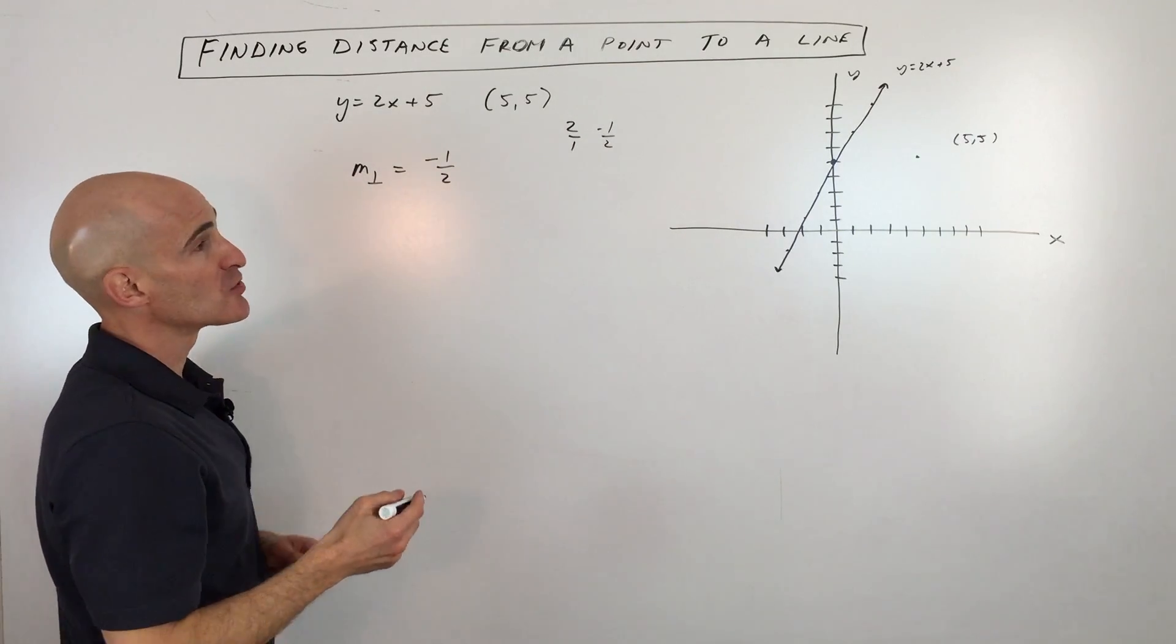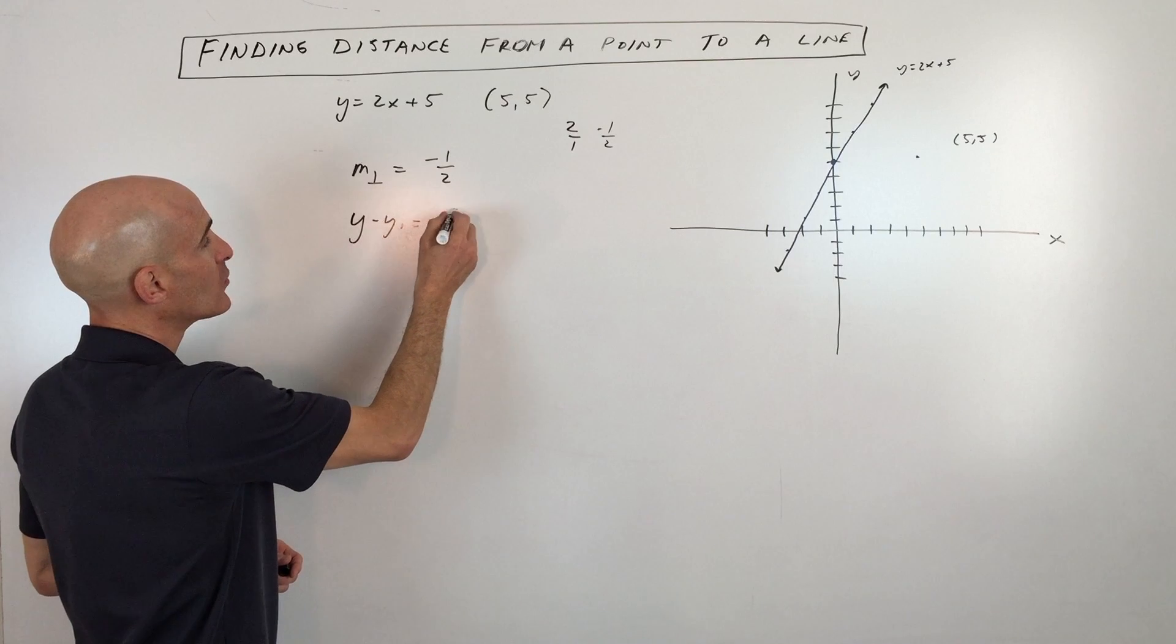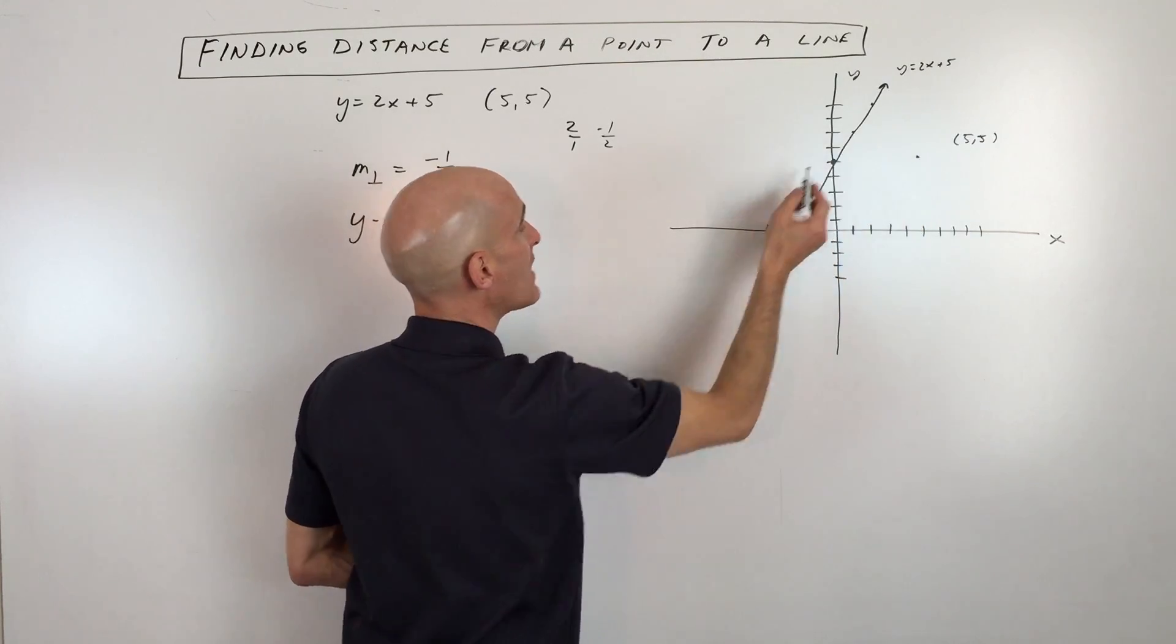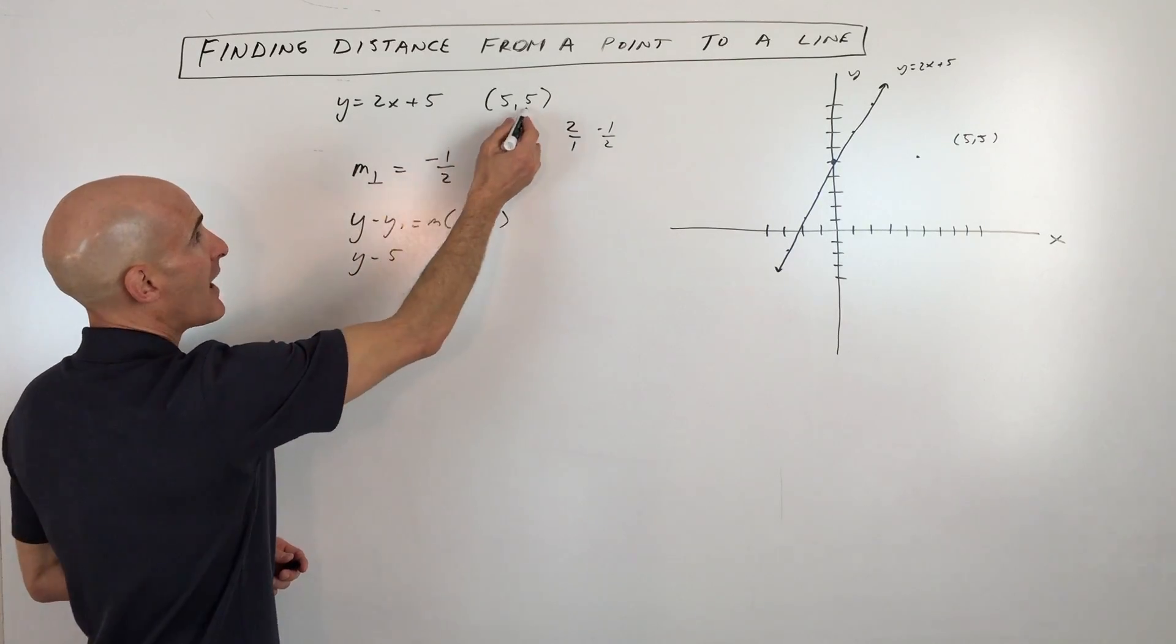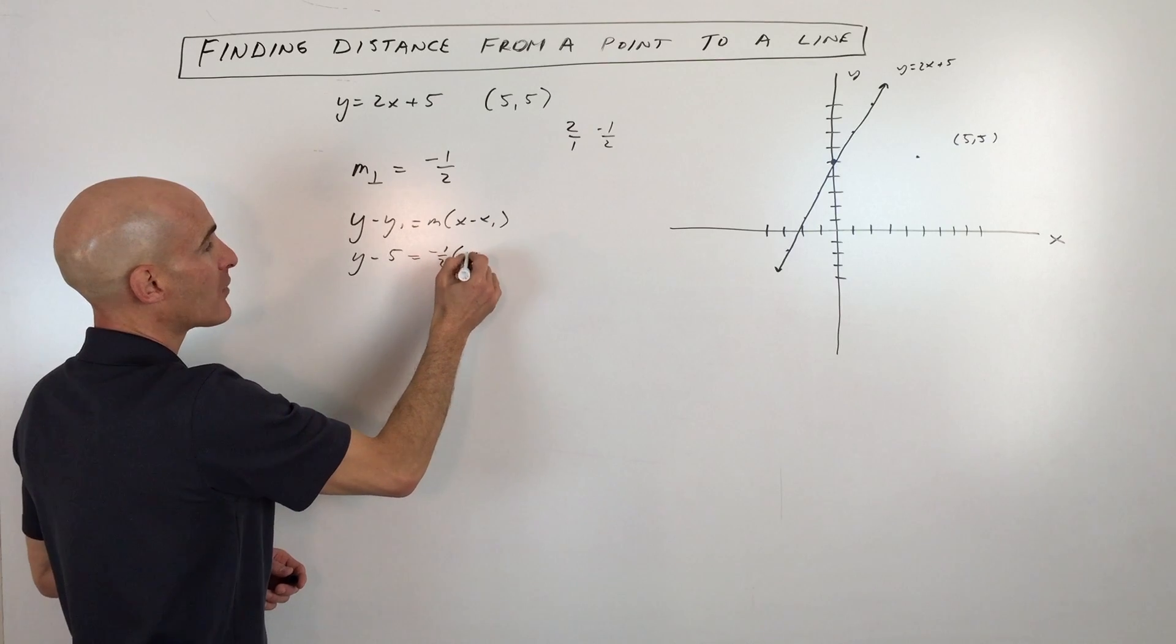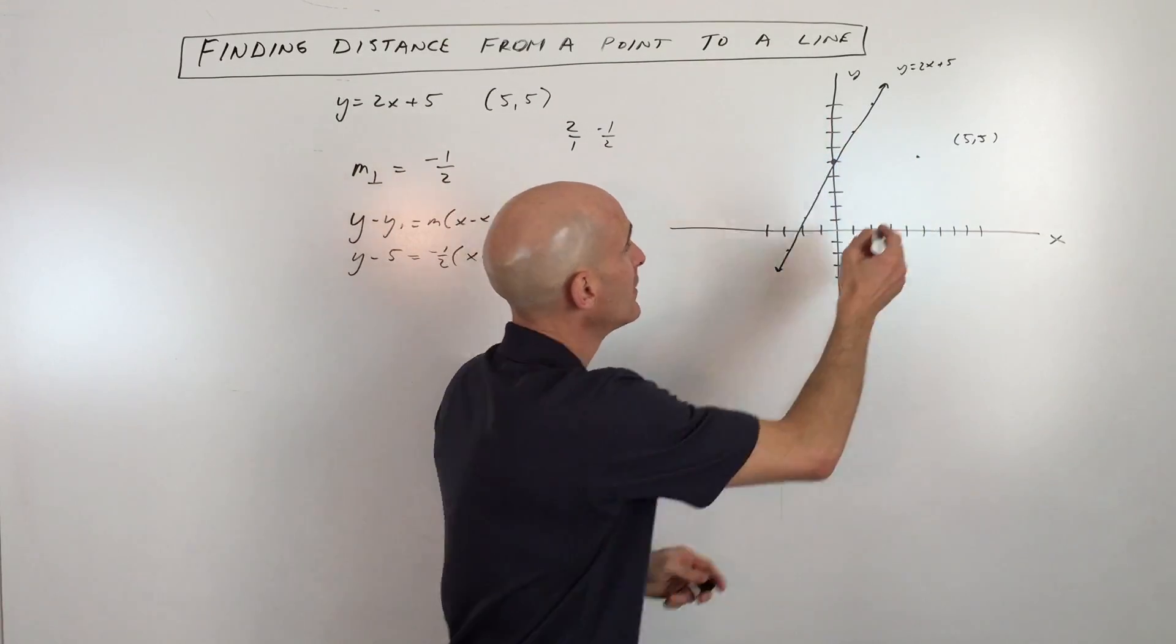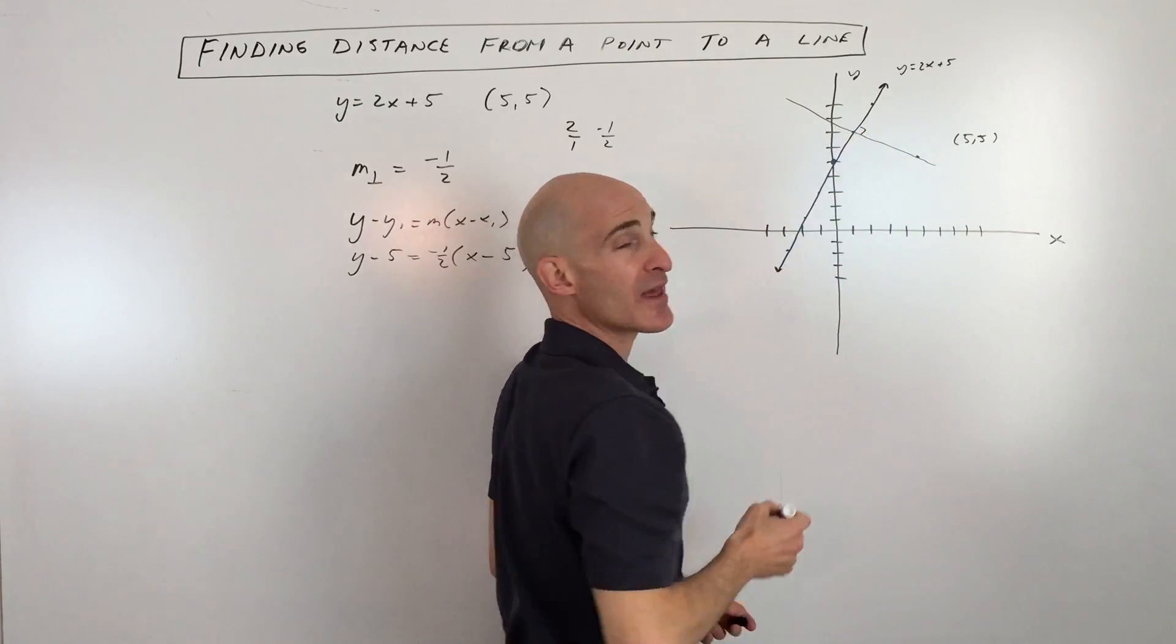Okay, so now what we're going to do is use the point-slope form of a line, which is y minus y₁ equals m times x minus x₁. Now we know it's going through this point (5,5) and it's going to be perpendicular to this line. So let's go ahead and put in what we know. The points are 5 and 5, so we've got 5 for our y coordinate, negative 1/2 for our slope, 5 for our x coordinate. So this represents the equation of the line that's going to be going through this point and perpendicular to that line.